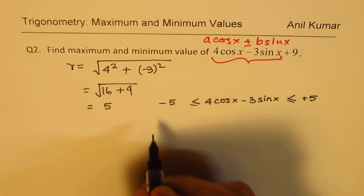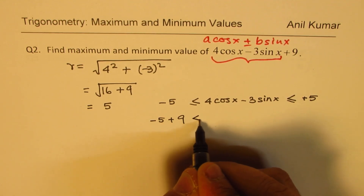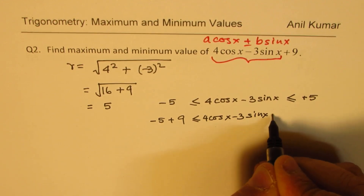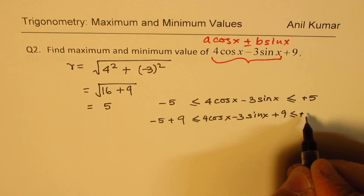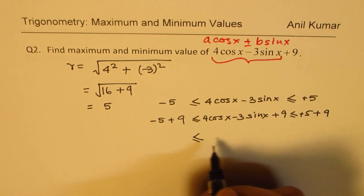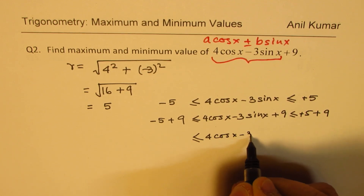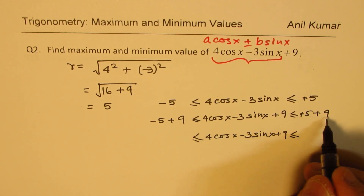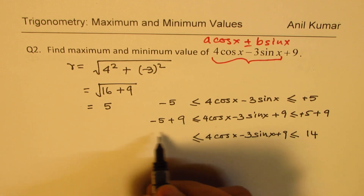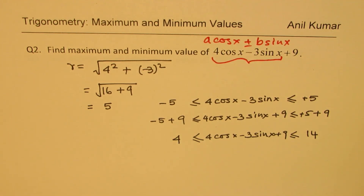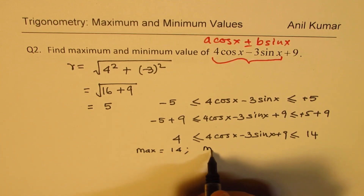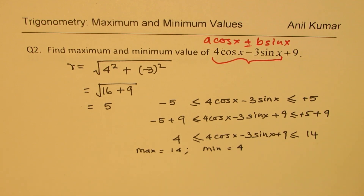But we also have plus 9 in the expression, so we add 9 throughout. We get that 4 cos x minus 3 sin x plus 9 is between 9 minus 5 and 9 plus 5. So 9 plus 5 is 14, and 9 minus 5 is 4. So the maximum value is 14, and the minimum value is 4. That is how you answer this part of the question.